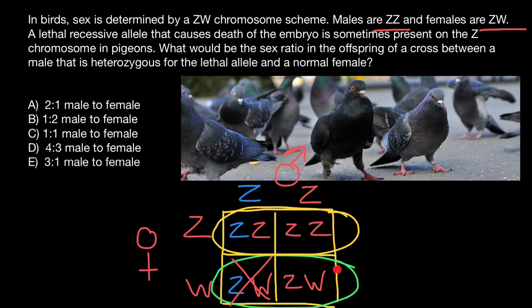And 50% of the female progeny are going to be phenotypically and genotypically normal. So out of all the progeny, the ratio of males to females is going to be two to one. Let's check our answers — answer A, two males to one female, is the ratio we expect in the progeny of this couple.